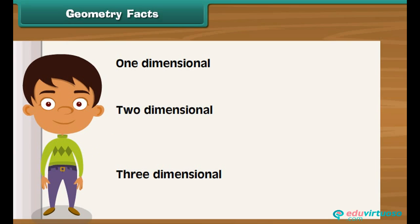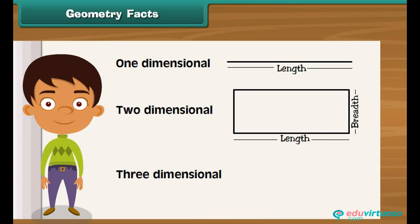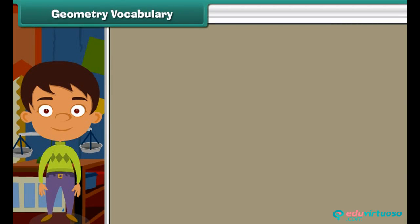Geometry facts. The geometry facts are generally divided into three parts: one-dimensional, two-dimensional, and three-dimensional. The one-dimensional geometry fact is called the line. Lines have only length. The two-dimensional geometry fact is about length and breadth.